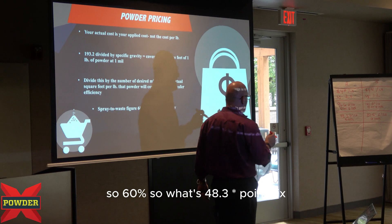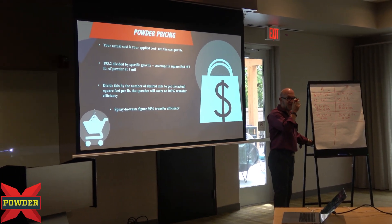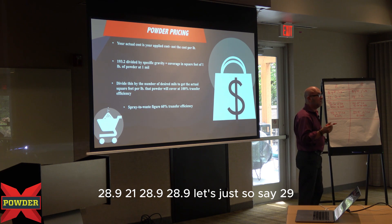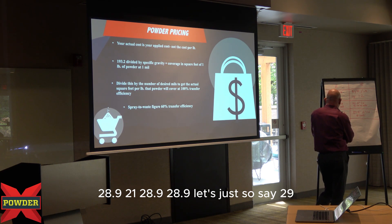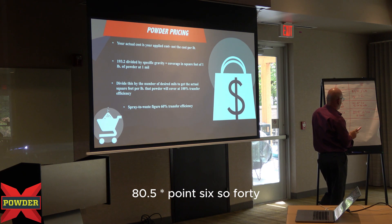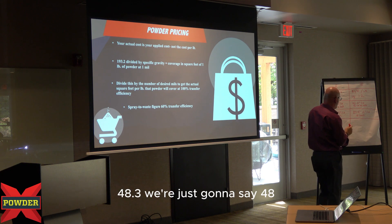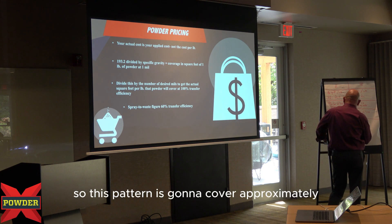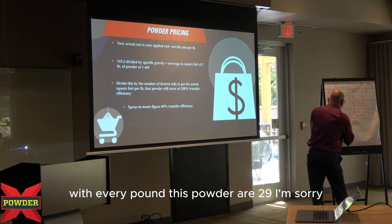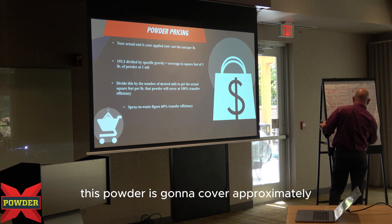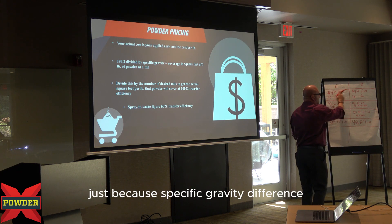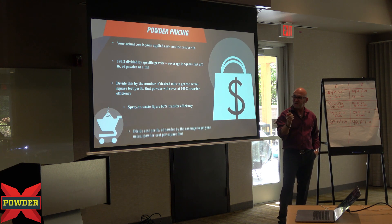So at 60% transfer efficiency: 48.3 times 0.6 is 28.9 — let's round that up to 29. And 80.5 times 0.6 is 48.3 — let's just say 48. So Company A's powder is going to cover approximately 29 square feet per pound, and Company B's powder is going to cover approximately 48 square feet per pound, just because of the specific gravity difference.